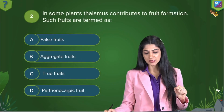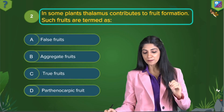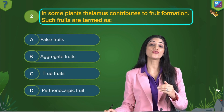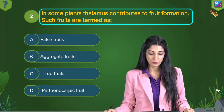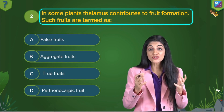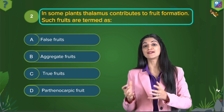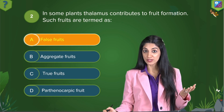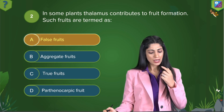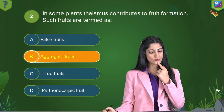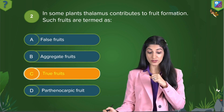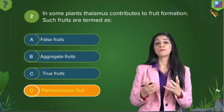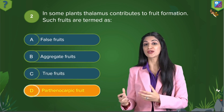The next question asks: in some plants, thalamus contributes to fruit formation. Such fruits are termed as — A. false fruits, B. aggregate fruits, C. true fruits, or D. parthenocarpic fruit?